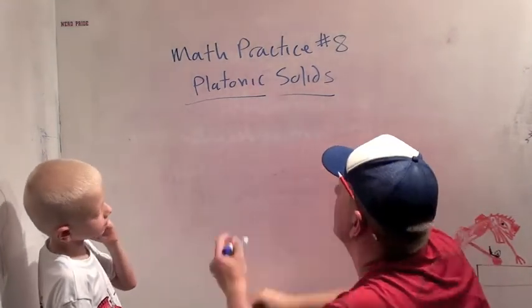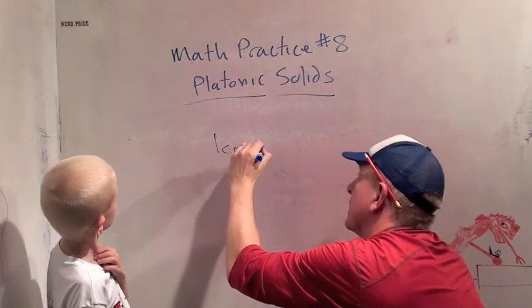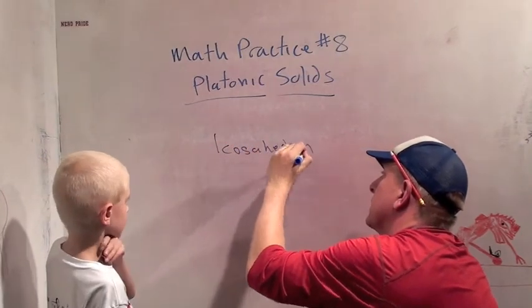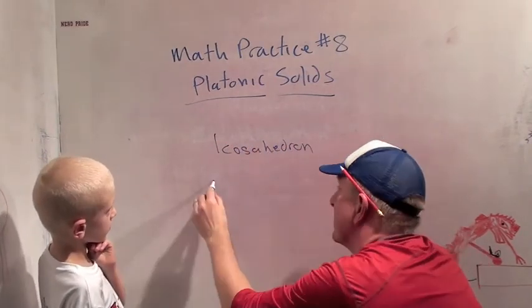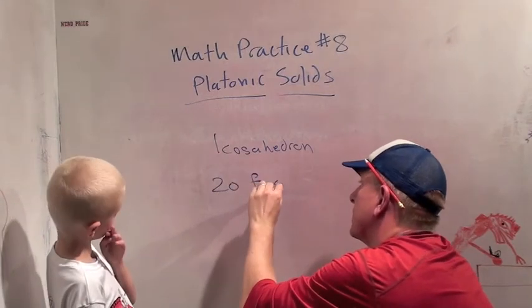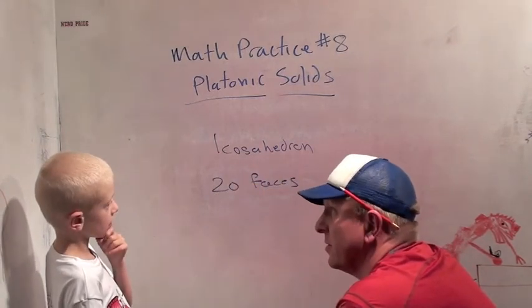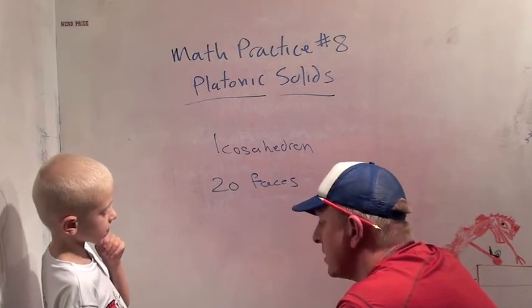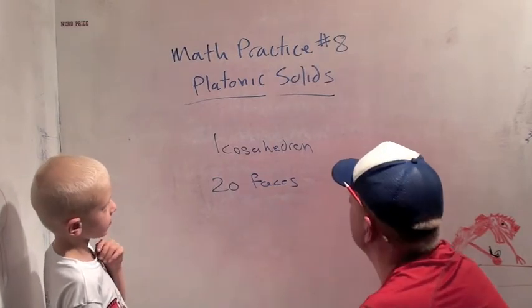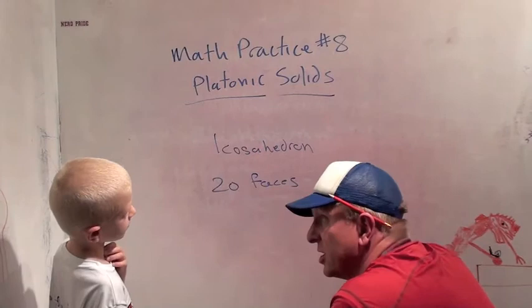And here's the last one, an icosahedron. This has twenty faces. And they're all triangles. Wow. Wow. That's a pretty cool shape. I'll show you online. So these are the platonic solids. So these are some really famous 3D shapes.